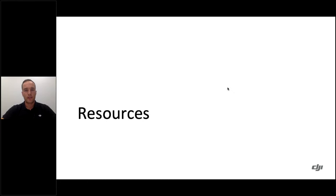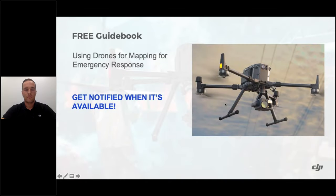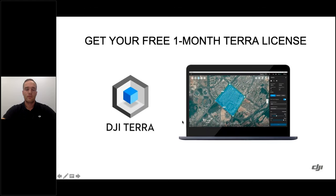Back to Eric for resources. We're developing a guidebook on using drones for mapping for emergency response, designed for beginners — step by step, including system requirements for DJI Terra. The guidebook targets completion around mid-October. Sign up via the link in chat to receive it as soon as it's ready. We're also offering a free one-month DJI Terra Pro license exclusively to webinar attendees — sign up on the form and we'll send you a trial code.